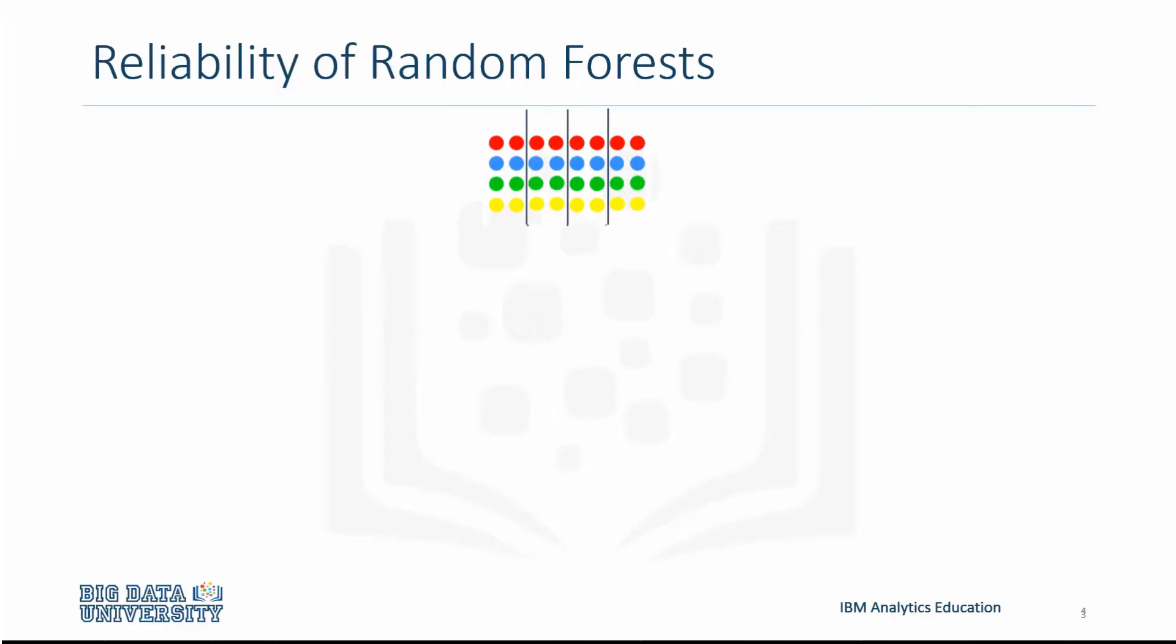Then a data point is pushed through each tree where the result is the average of the results of each tree. So let's examine what that would look like.